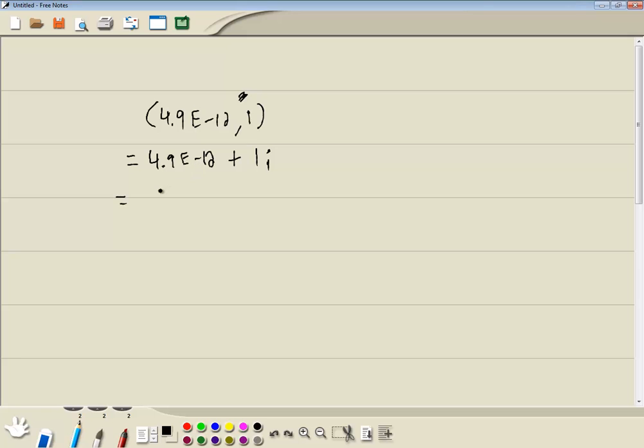Well e to the negative twelve, this means four point nine times ten to the negative twelve plus one i, or just i.